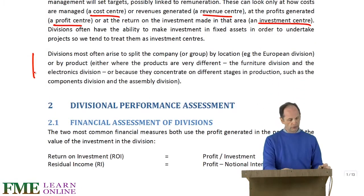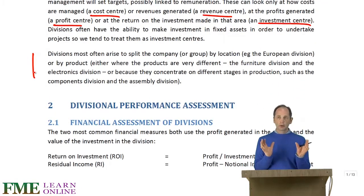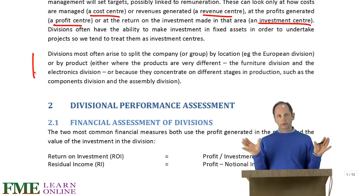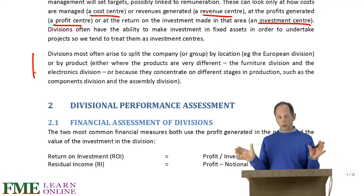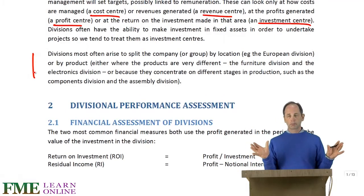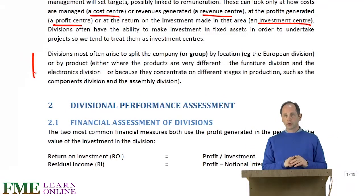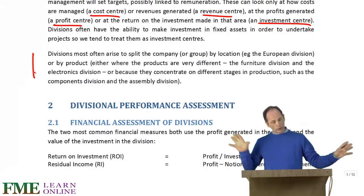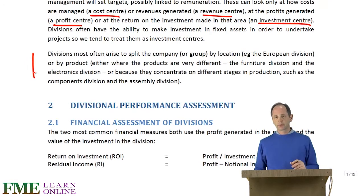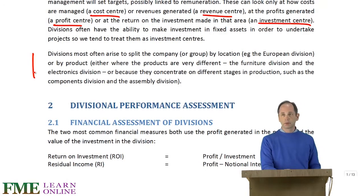When do we get divisions? Divisions mostly occur where you either have very different products. It doesn't make a lot of sense to have a single production manager in charge of producing both office furniture and ships, for example. You would have a ship division and an office furniture division, because production is different, marketing is different, and sales is different.